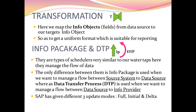Info package and DTP are types of schedulers, very similar to water tabs — they manage the flow of data. The difference between them is that info package is used when we want to manage the flow between the source system and the data source, whereas a data transfer process (DTP) is used when we want to manage the flow between the data source and the info provider.